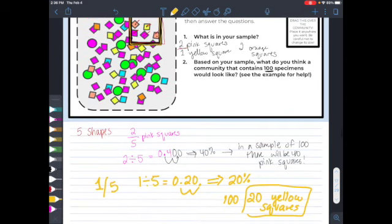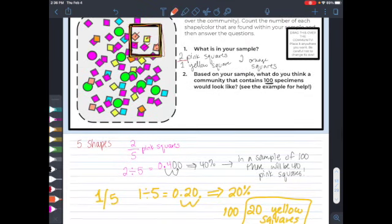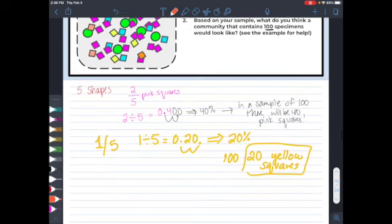We can do this exact same thing now for our orange squares. So for our orange squares, right up here, I see that we have, again, two of them. So two out of the five are orange.